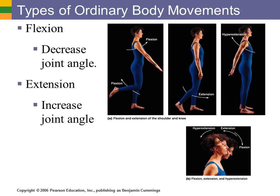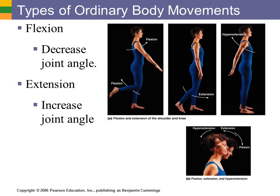The opposite of that is extension, which is increasing the joint angle. From anatomical position, anytime you're bringing your arm backwards or straightening your leg or straightening your elbow, you are extending the joint — making the two bones further apart and increasing the joint angle. Anytime you go beyond 180 degrees, pushing your shoulder back for example, that would be hyperextension.